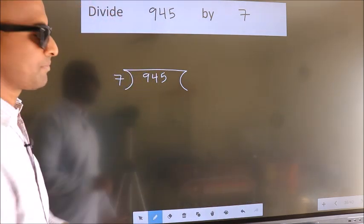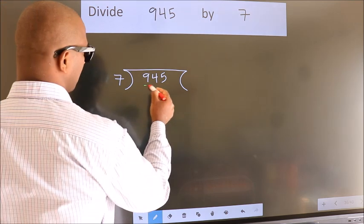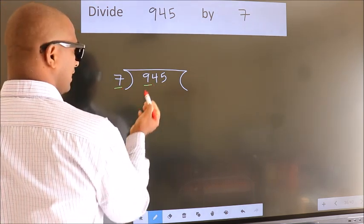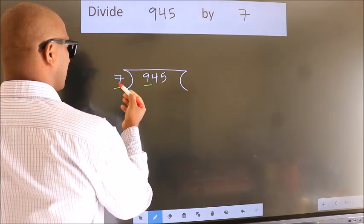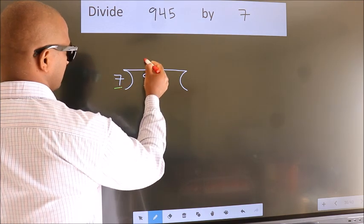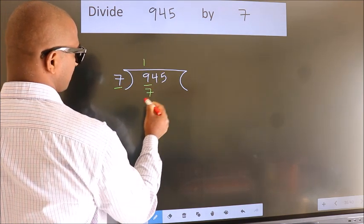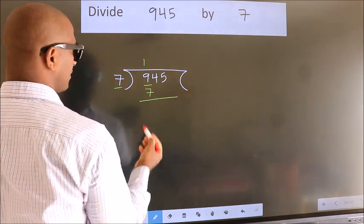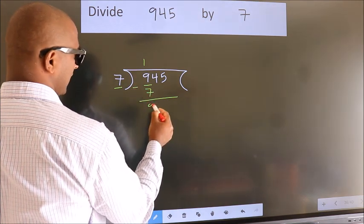Next, here we have 9, here 7. A number close to 9 in the 7 table is 7 ones, 7. Now we should subtract. We get 2.